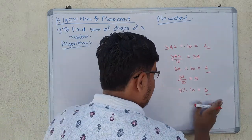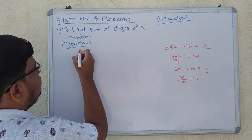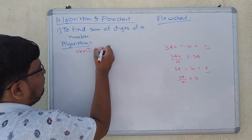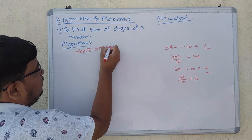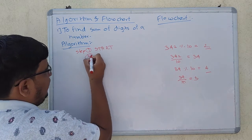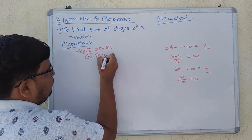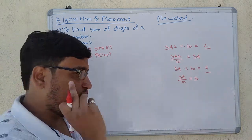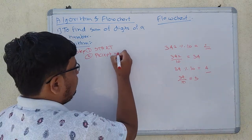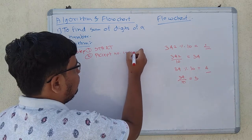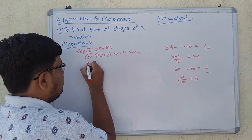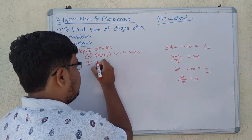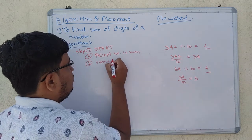Now let's see what is the algorithm. Step 1, as usual, is Start. Step 2 is: accept the number from the user, that is, accept num. Step 3 is: initialize sum to 0.